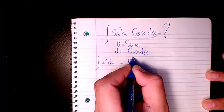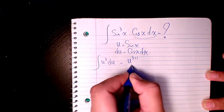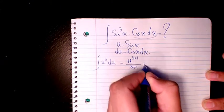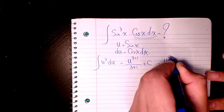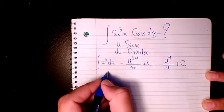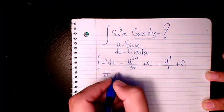It's going to be u to the power of 3 plus 1, divided by 3 plus 1, plus C, which is u to the power of 4 over 4 plus C.